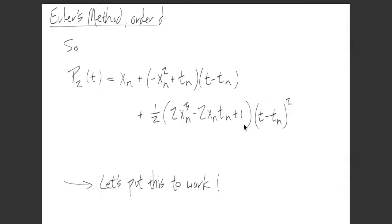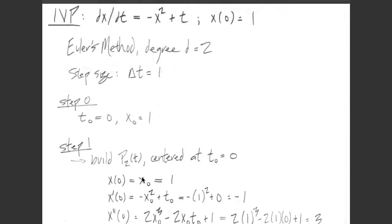Going back to our generic formula and plugging everything in gives us the full degree 2 Taylor polynomial. This looks complicated, but remember xₙ and Tₙ are already known from previous steps, so the only variable is t.